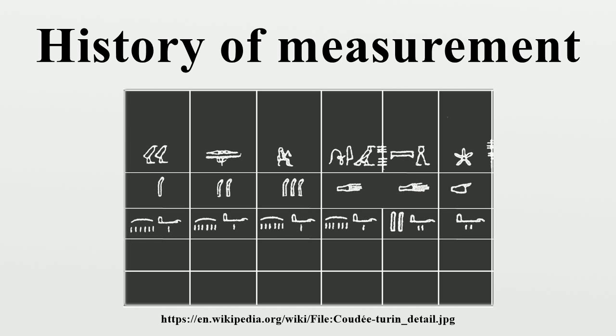The Egyptian cubit, the Indus Valley units of length, and the Mesopotamian cubit were used in the 3rd millennium BC and are the earliest known units used by ancient peoples to measure length. The units of length used in ancient India included the Dhanush, the Krosa, and the Yodhana.